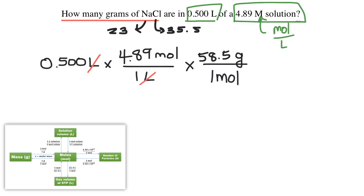Okay, everything's set up. Let's plug this into our calculator and see what we get. 0.5 liters times 4.89 times 58.5 and we get 143 grams of sodium chloride. That's how much sodium chloride is in 0.5 liters of a 4.89 molar solution.